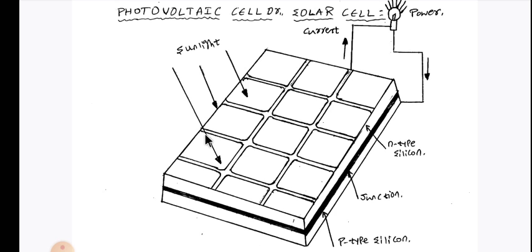As we know, sunlight is composed of photons or particles of solar energy. When the sunlight strikes the photovoltaic cell, the semiconductor material absorbs the photons from the sunlight. When enough photons are absorbed by the negative layer or n-type silicon of the semiconductor material, electrons are released.